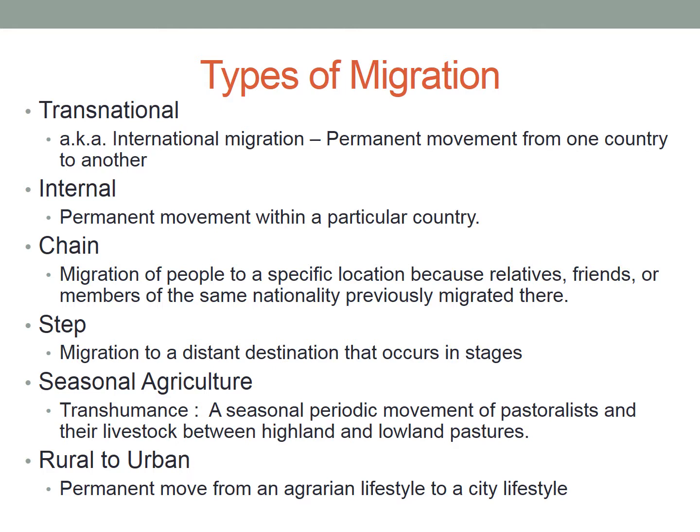There are only about 168 million international migrants. That sounds like a lot, but compared with the 7.5 billion people on the planet, it constitutes roughly only about 3% of the world's population living in another country. That means most migration is internal — a permanent movement within a particular country.